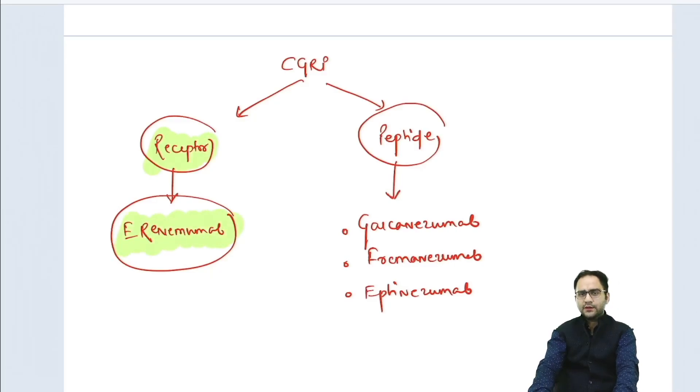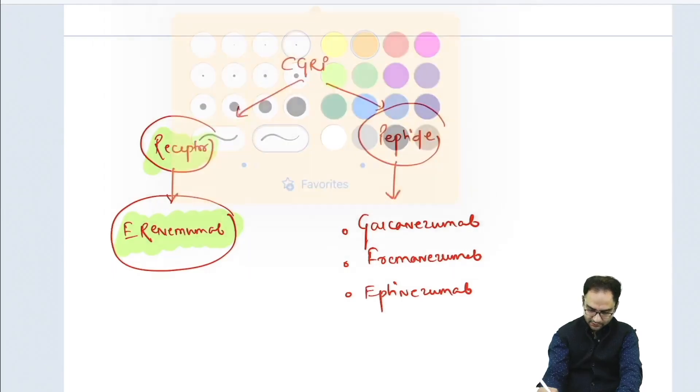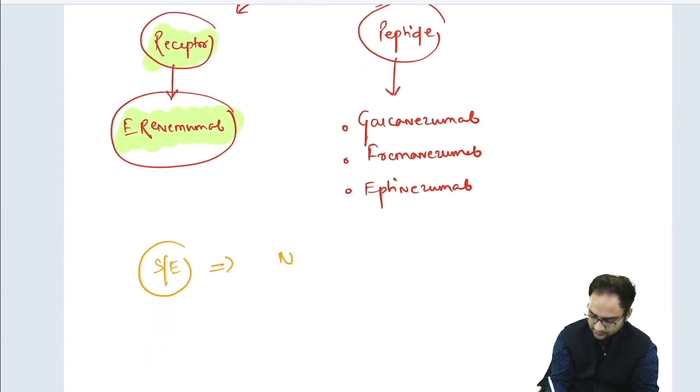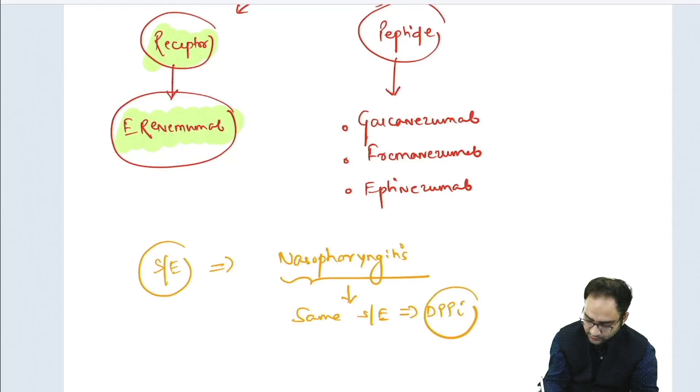Of the important side effects that you need to remember, these group of drugs have an important side effect known as nasopharyngitis. This same side effect you also see with DPP-4 inhibitors.